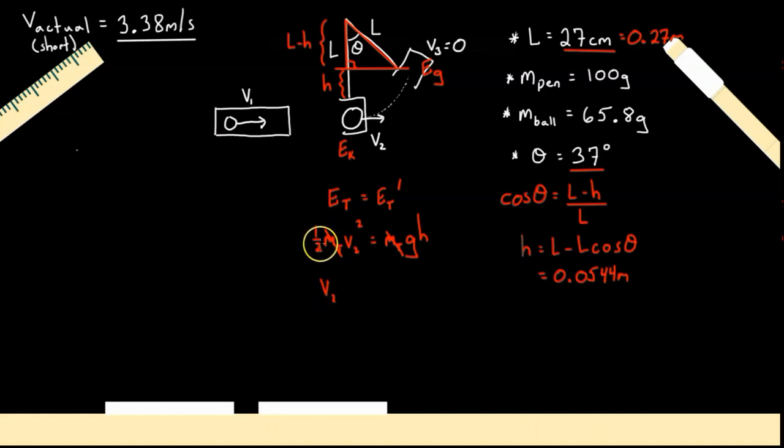So multiply by 2, and we get 2gh, and then take the square root of both sides and we'll get v2. If we plug those numbers into our calculator using the h we got in our previous calculation, we get a speed of 1.03 meters per second. So right here together, the ball and pendulum moved at 1.03 meters per second. But what did it move here?